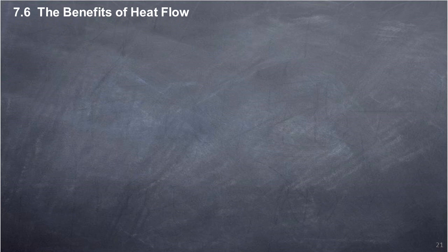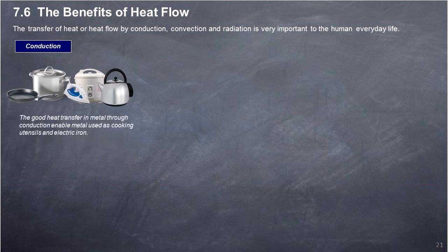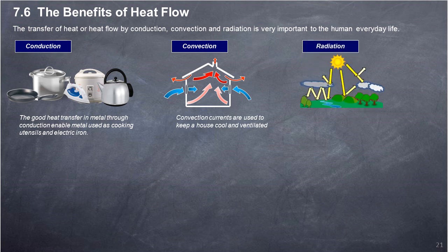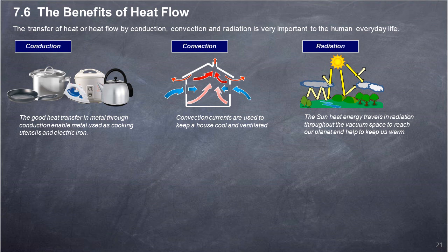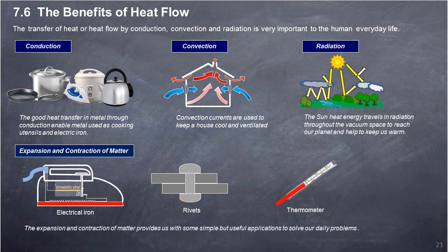7.6 The benefits of heat flow. The transfer of heat — or heat flow by conduction, convection, and radiation — is very important to human everyday life. Conduction: good heat transfer in metal through conduction enables metal to be used as cooking utensils and electric irons. Convection: convection currents are used to keep a house cool and ventilated. Radiation: the Sun's heat energy travels by radiation throughout the vacuum of space to reach our planet and help keep us warm. Expansion and contraction of matter provide useful applications such as electric irons, rivets, and thermometers to solve our daily problems.